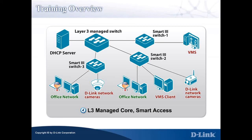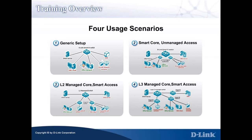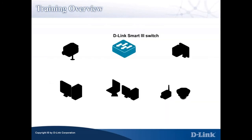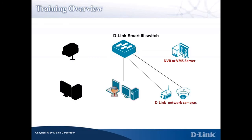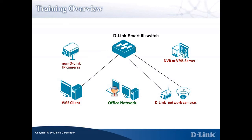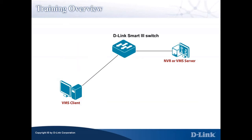Let's take a look at the advantages of the Auto Surveillance VLAN solution before starting the in-depth solution configurations. D-Link Auto Surveillance VLAN is a switch technology with which customers can deploy IP surveillance solutions easily and automatically in a hybrid network, where office computers and network cameras coexist in the common network infrastructure.